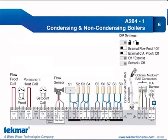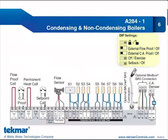Our flow sensor is a three-wire connection to the control, easy to distinguish because of reversed color coding from gray to white. The 284 supports an analog vortex-style flow sensor such as the Vortex series from Grundfos. Our other sensors include the outdoor sensor and eight sensors: the boiler supply sensor, boiler return sensor, boiler inlet sensor, and individual boiler outlet sensors. The DIP switches for external flow proof and external combustion air proof must be placed in the on position since we are doing both.